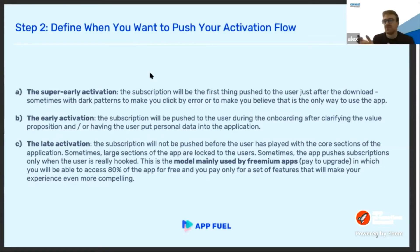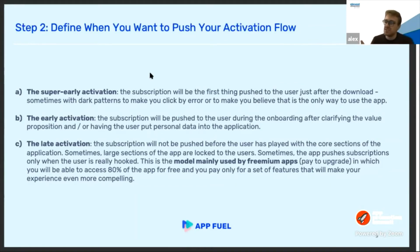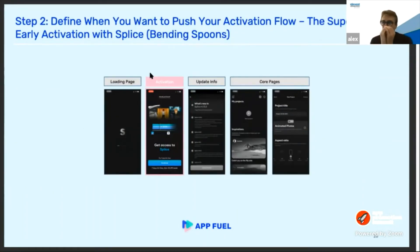The second way is early activation — something we see a lot for paid-to-use apps — where you push the subscription at the end of the onboarding, after clarifying the value proposition and engaging the user. The last option, more applicable for freemium apps, is to push it after the user is hooked and you want to give them a special feature to upgrade their experience. Let me illustrate with examples for each approach.